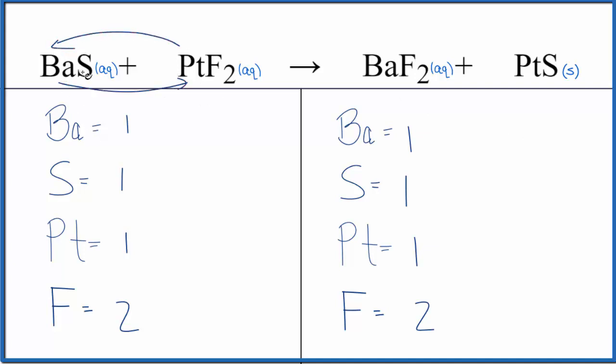We have barium sulfide in the reactants, but now we have barium fluoride in the products. We had platinum fluoride, now we have platinum sulfide in the products. So that's a double displacement reaction where these two metals switched places. We end up with this insoluble compound that falls to the bottom of the test tube as a precipitate.